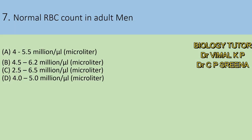Normal WBC count in adult men: A. 4 to 5.5 million per microliter, B. 4.5 to 6.2, C. 2.5 to 6.5, D. 4 to 5. Which is the answer? Here answer is B — normal WBC count in adult men is 4.5 to 6.2 million per microliter.